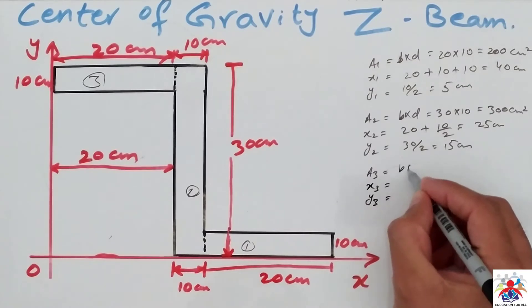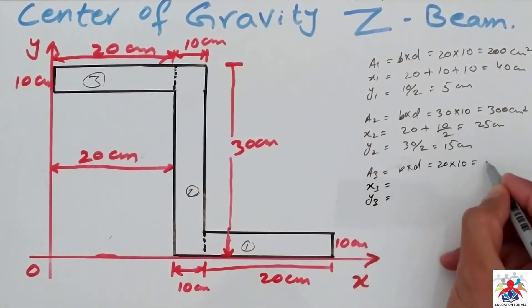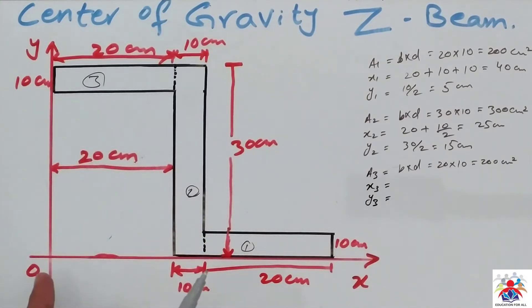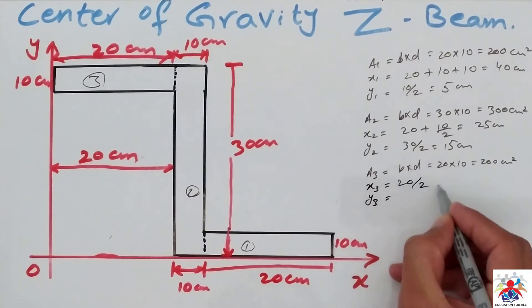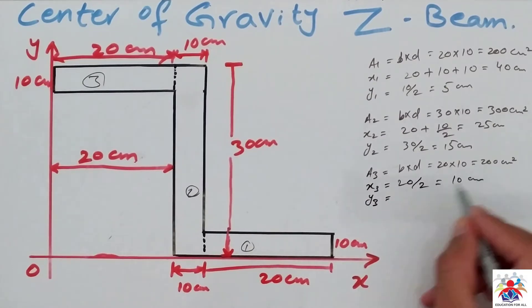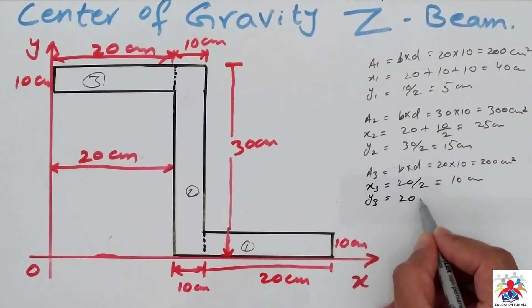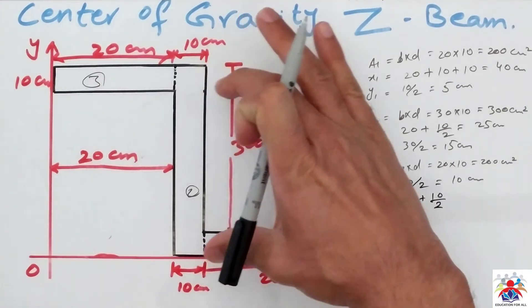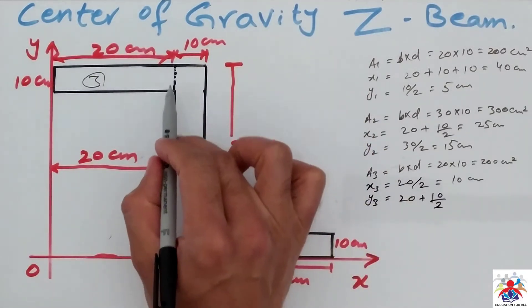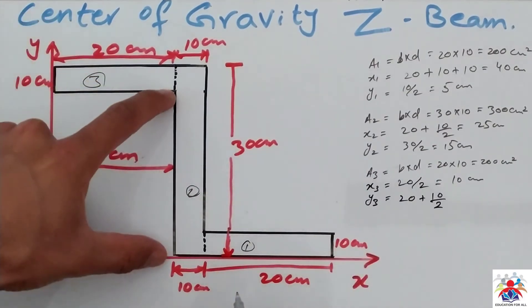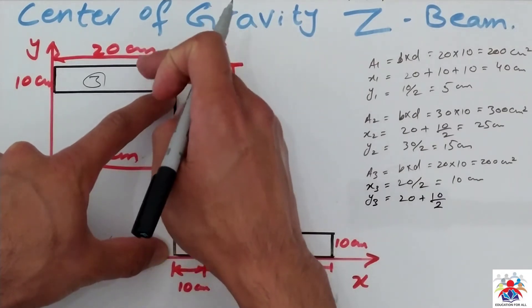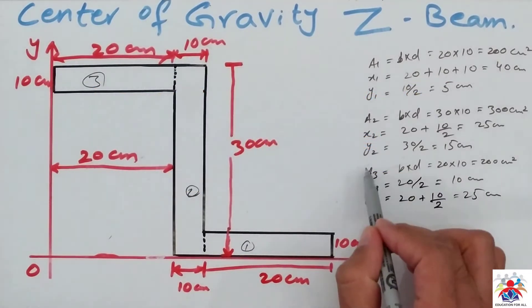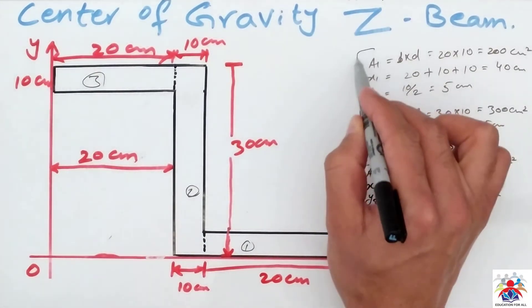For figure number three, similarly, base multiplied by depth is 20 multiplied by 10, equal to 200 square centimeters. For x3, the figure is connected to the origin line, so it will be 20 divided by 2, giving 10 centimeters. Y-bar is 20 plus 10 divided by 2 — from here to there is 20, then half of 10 is 5 — so y3 equals 25 centimeters. Now we have calculated all three areas, three x-values, and three y-values.